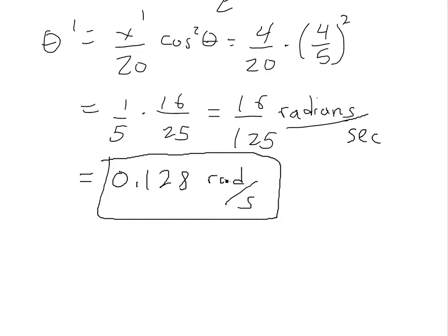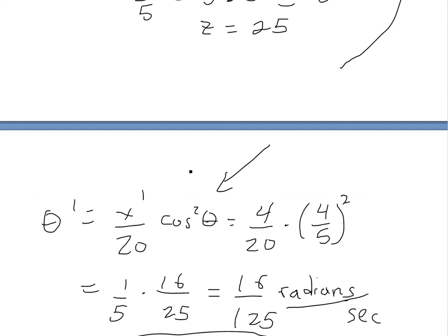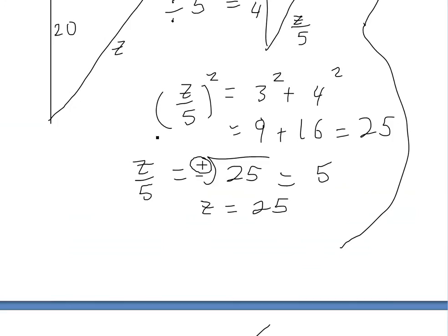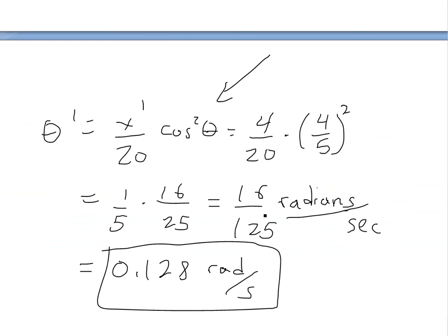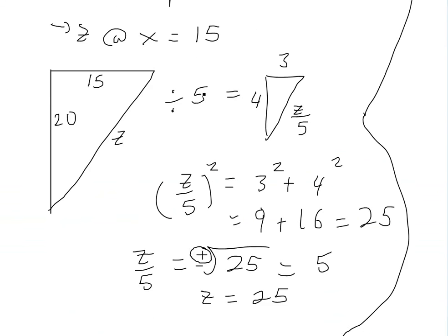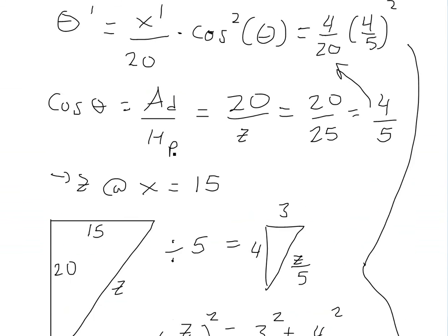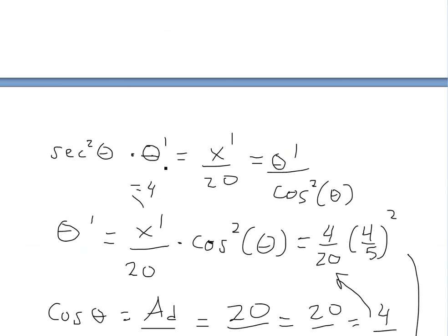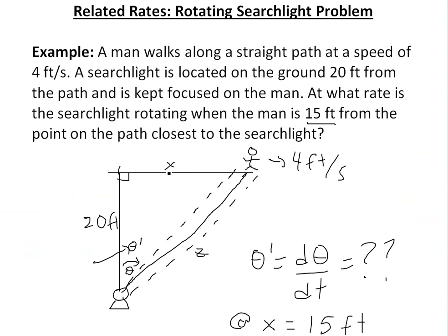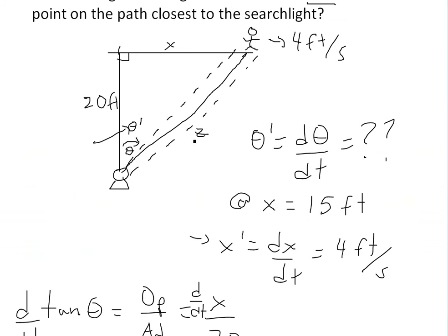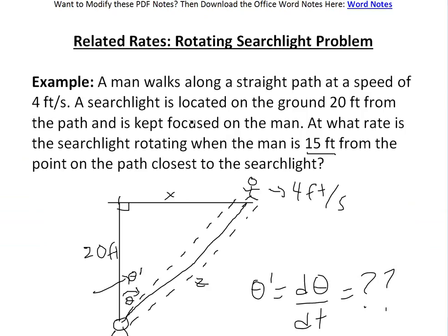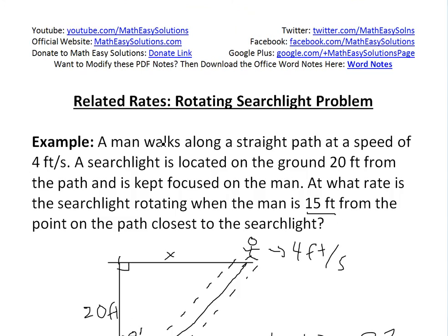And this is the rate that the searchlight is rotating. The reason we use radians instead of degrees is because the derivatives of trigonometry are derived using radians by definition. Anyway, that's all for the video. You can download these exact notes in the Dropbox link below, and you can also see related videos in the video description below. Thanks for watching, and stay tuned for another Math Easy Solution.